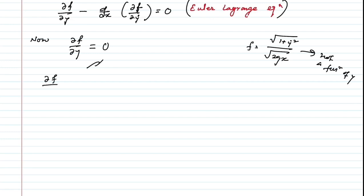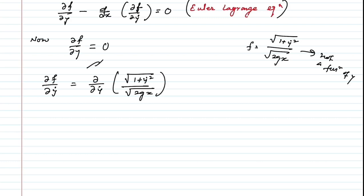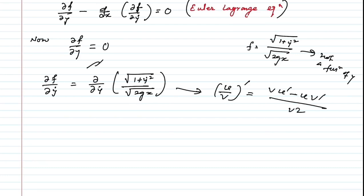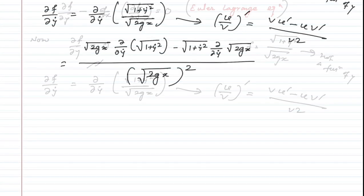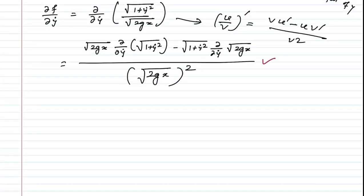We compute ∂/∂ẏ of √(1 + ẏ²) / √(2gx). Applying the quotient rule (d(u/v) = (v·du − u·dv)/v²), since √(2gx) is a function of x only, its derivative with respect to ẏ is zero, so that term vanishes.